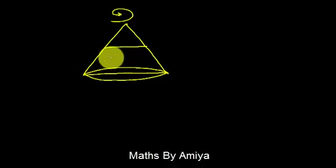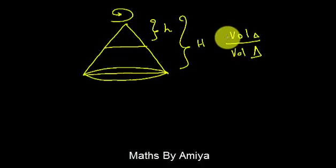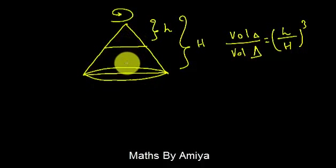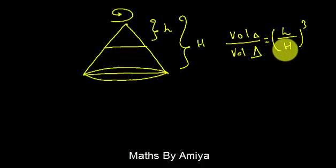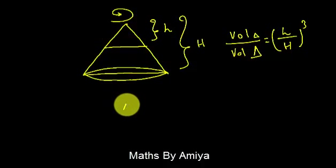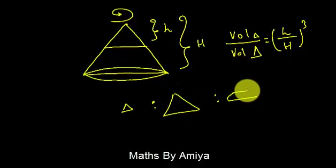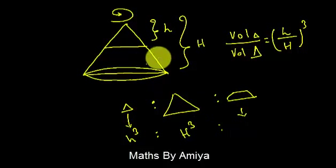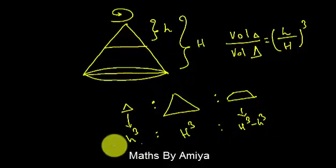If we have a cone and we cut it parallel to its base, the height of the smaller upper cone is small h and the height of the complete cone is capital H. If we need to find the volume ratio of the small cone to the volume of the big cone, it is in the same height upon height — but in the cone it is nothing but cube, not square as in the 2D triangle. So if we divide a bigger cone into a small cone and a frustum by a cut parallel to the base, the volume ratio of the smaller upper cone to the complete cone is h by H whole cube. For the frustum, the volume is total volume minus small volume, which is capital H cubed minus small h cubed.